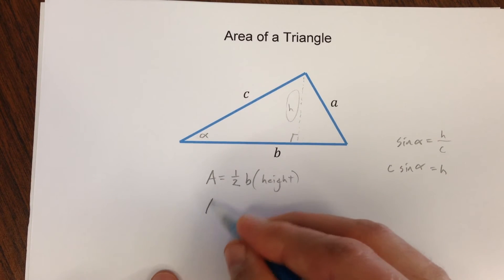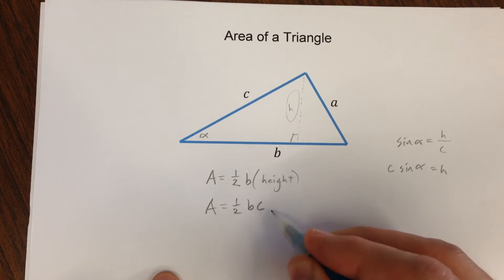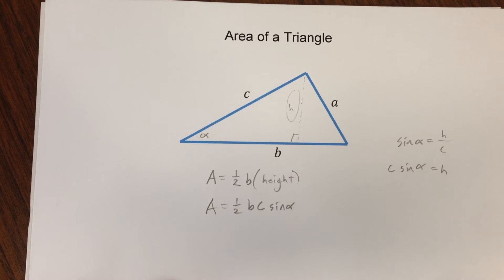Well then we could say area equals one-half base B times C sine alpha.